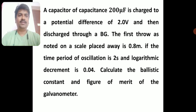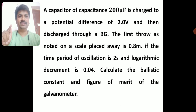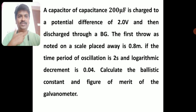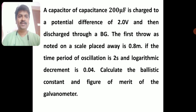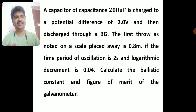Problem 3: A capacitor of capacitance 200 microfarad is charged to a potential of 2 volts, then discharged through a ballistic galvanometer. The first throw noted on the scale is θ₁ = 0.8 meter. The time period of oscillation T = 2 seconds and logarithmic decrement λ = 0.04. Calculate the ballistic constant K and the figure of merit of the galvanometer.